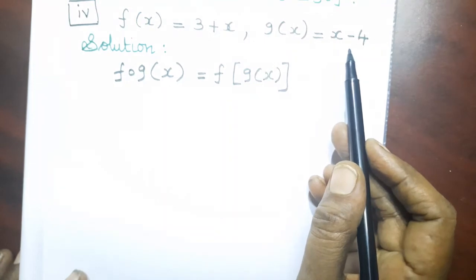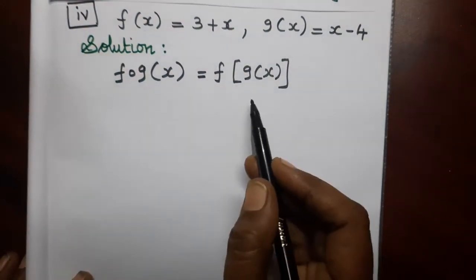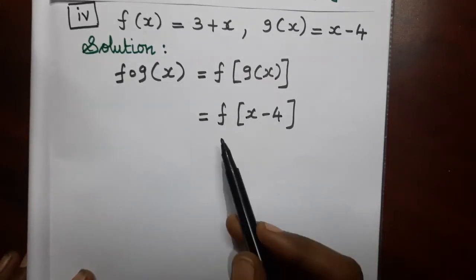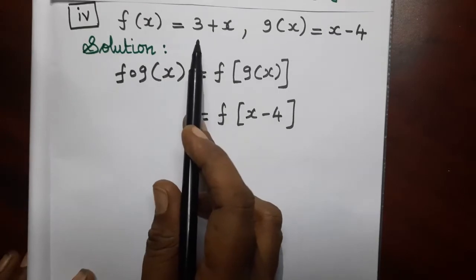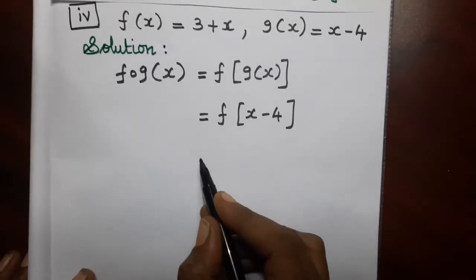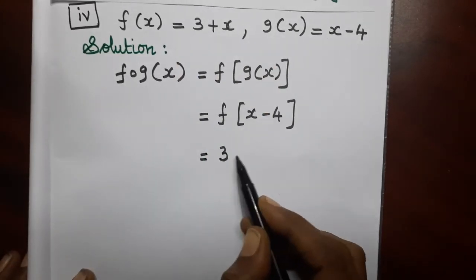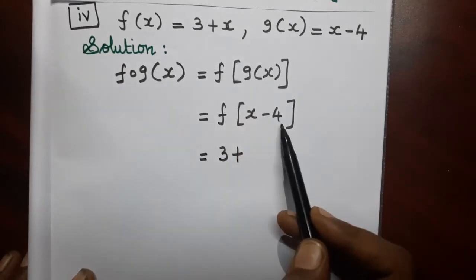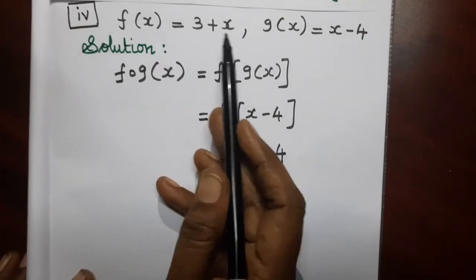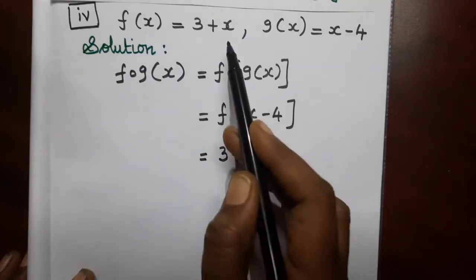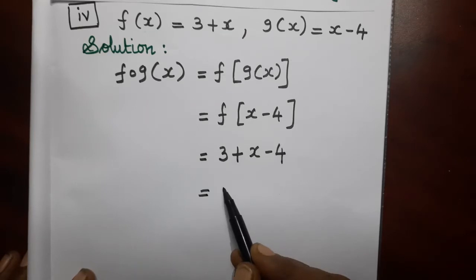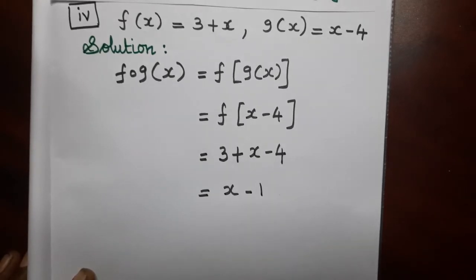It is x minus 4. If we have f dot g of x, we substitute x minus 4. This is the f of x model. f of x function is 3 plus x. In the x place, we substitute x minus 4. Then what do we get? First there is 3, then plus symbol, then x. The value of x here is x minus 4, so we substitute that. So f of x, in the function we go, in x's place we substitute the bracket value. Then we get 3 minus 4, which is minus 1. So the answer is x minus 1.